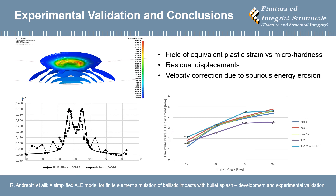The comparison of the simulation results with the experimental evidence confirms the hypothesis. The plastic strain field can be conservatively estimated to great detail, especially at incidence angles near 90 degrees. The residual displacements of the plates can be conservatively estimated as well, provided that the spurious energy erosion due to the arbitrary Lagrangian-Eulerian formulation is taken into account.